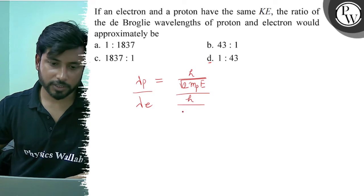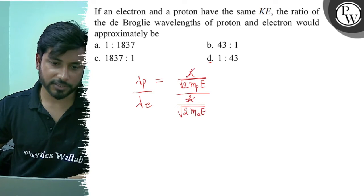Similarly, lambda electron is H upon root under 2, mass of electron and kinetic energy E. H from H cancel, 2 from 2 cancel, E from E cancel.